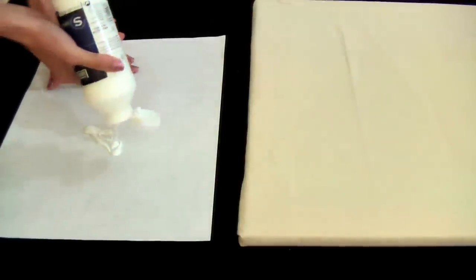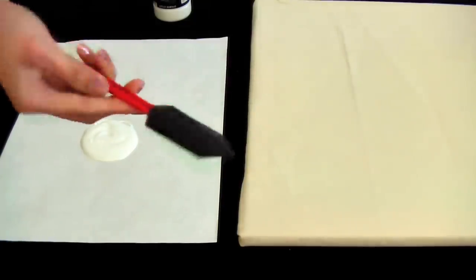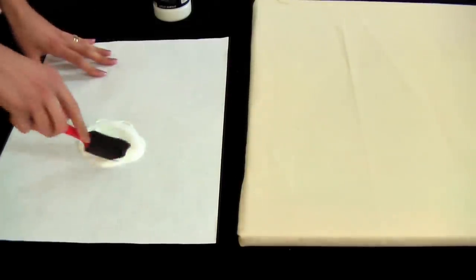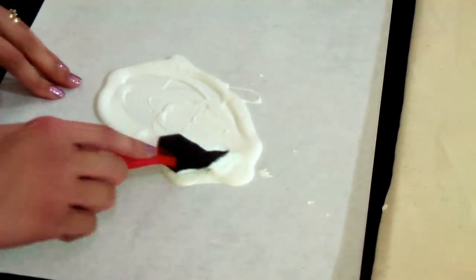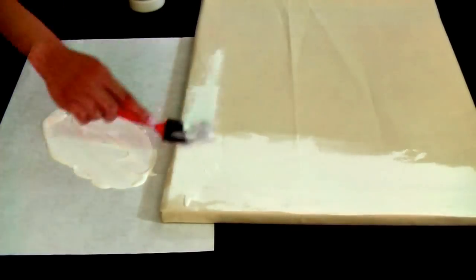Pour the gesso out on your palette paper and then grab your brush and saturate your brush. And then paint away and cover every single area.